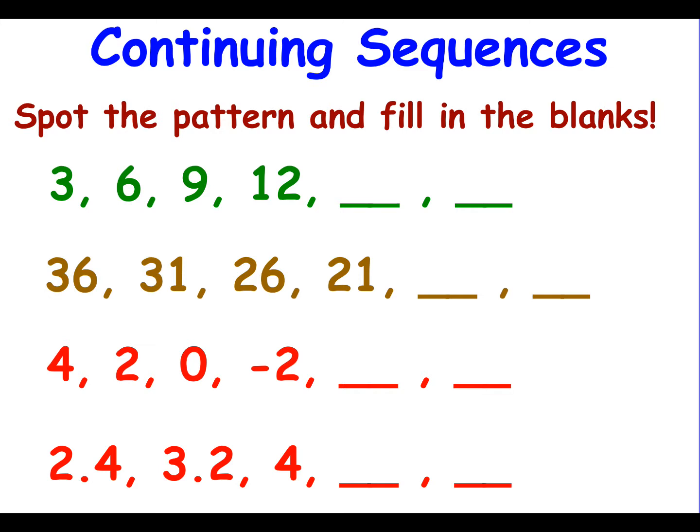So a sequence is a pattern and that pattern is what we call a rule. So in order to continue a sequence, we need to establish what the rule is first and then carry on with that rule. So how do I get from 3 to 6 and 6 to 9? Well, I'm adding 3 every time. So to continue my sequence, I need to keep adding 3. So the missing numbers here are 15 and 18.